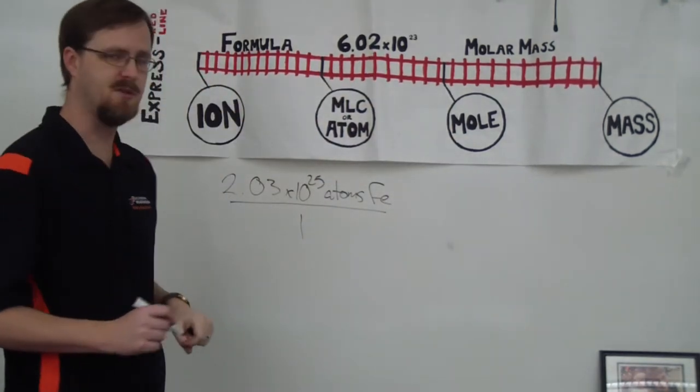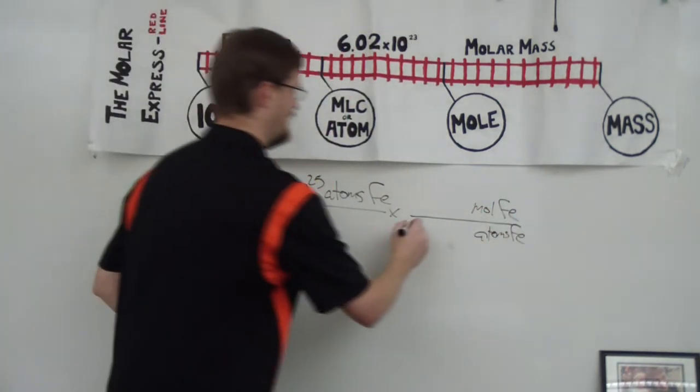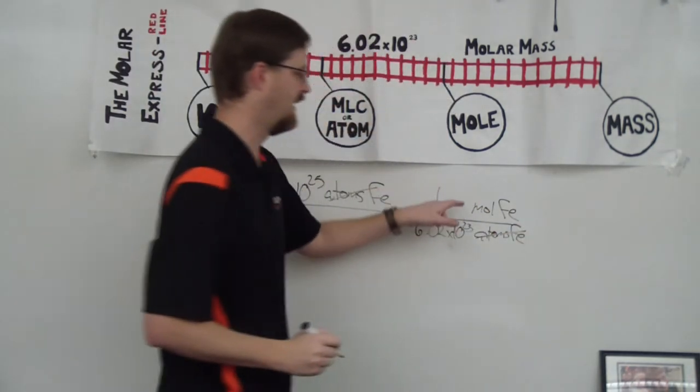Okay? So that means this is a two-step process. Step number one is using 6.02 times 10 to the 23rd atoms per mole. So we're going to do that. So atoms on top, meaning atoms on the bottom. We've got moles of iron on top. And according to this, it is 6.02 times 10 to the 23rd atoms of iron for every one mole. We can cross out atoms. We're left with moles.